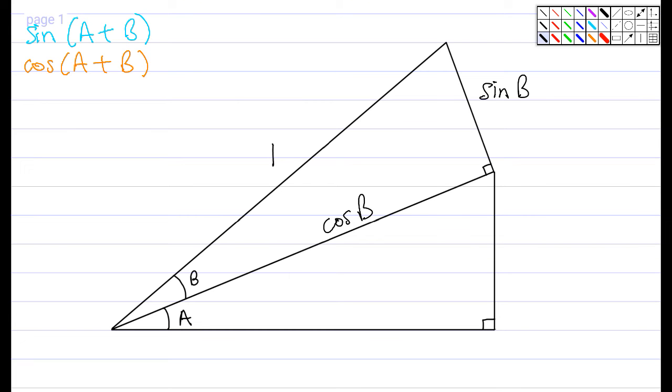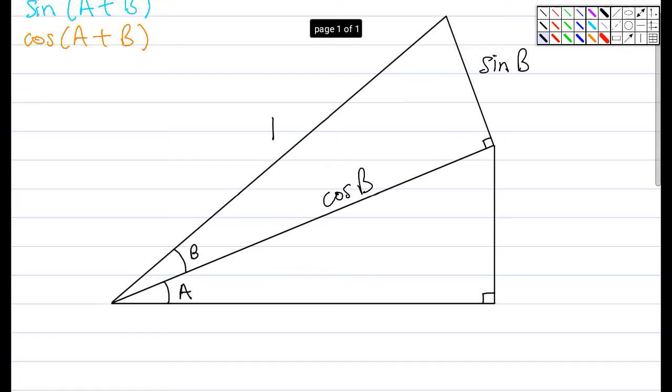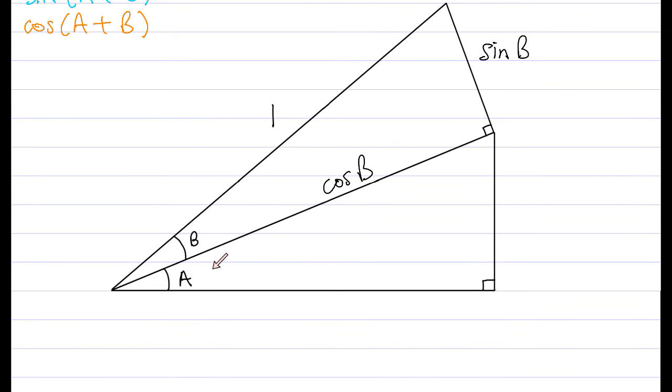Well, if I know that the hypotenuse of the lower triangle is cosine of B, then I can figure out the other two legs, basically doing what we just went over, which is take the hypotenuse, multiply by sine of this angle right here, and that's this side. Cosine of B, sine of the angle.